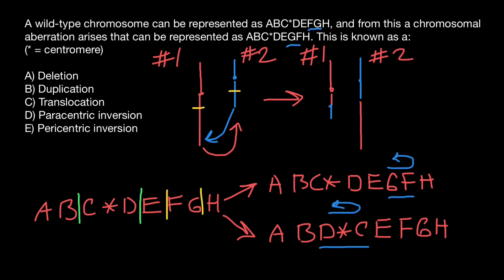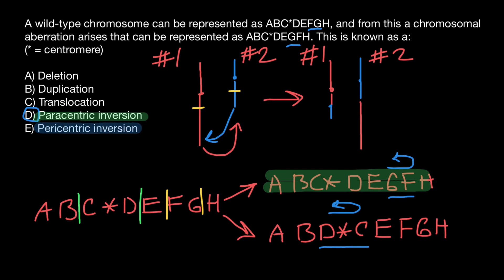So now, as you see, we can choose the answer. This is paracentric inversion, which doesn't involve centromere region. Paracentric inversion, which we see here. And pericentric inversion, which we see here.